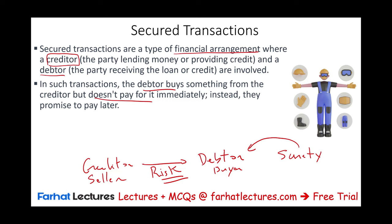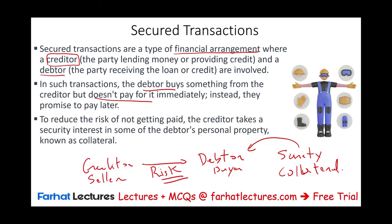Or, we can ask the debtor to put up some sort of collateral. Collateral means a secured interest — the debtor puts up some sort of asset, and in case they don't pay, the creditor can take this asset. Think of it like a mortgage: when you buy a house, your home is the collateral. Here, the creditor takes a security interest in personal property.